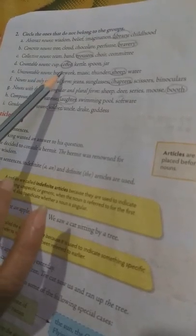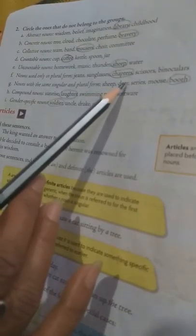Uncountable nouns. Homework, music, thunder, water. All these are uncountable nouns. Sheep. Sheep is your countable noun. So, make it circle. Nouns used only in plural form. Jeans, sunglasses, scissors, binoculars. All these are the singular plural form same. But chapters, you can make it singular and plural. So, that's why chapters make it circle. Nouns with the same singular and plural form. Sheep, deer, series, moose. So, singular plural form same. So, both you can make it singular and plural. So, that's why both make it circle.